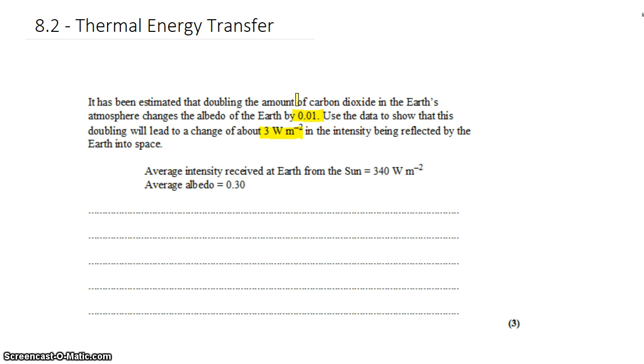So if we say that the albedo of the Earth goes up by 0.01, what we're basically saying is that the amount of reflection, the Earth's reflectivity, goes up by 1%.